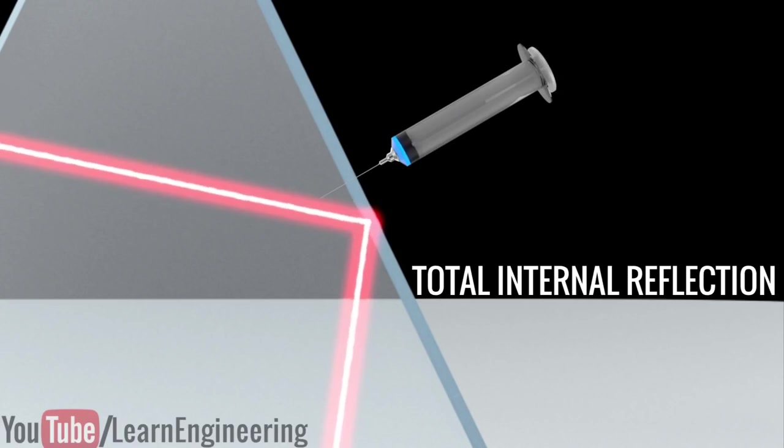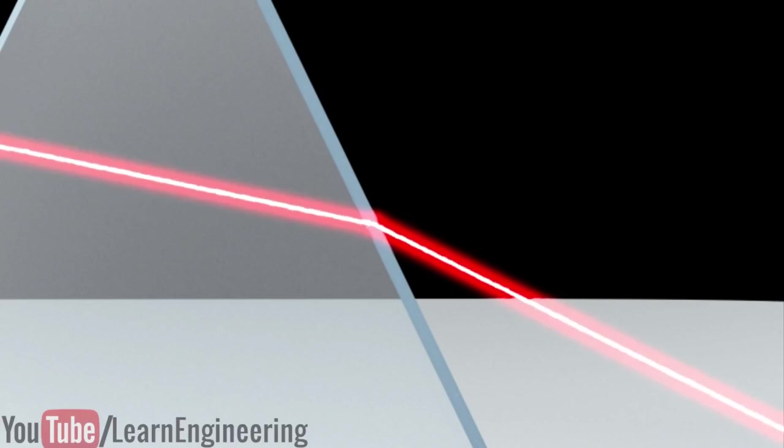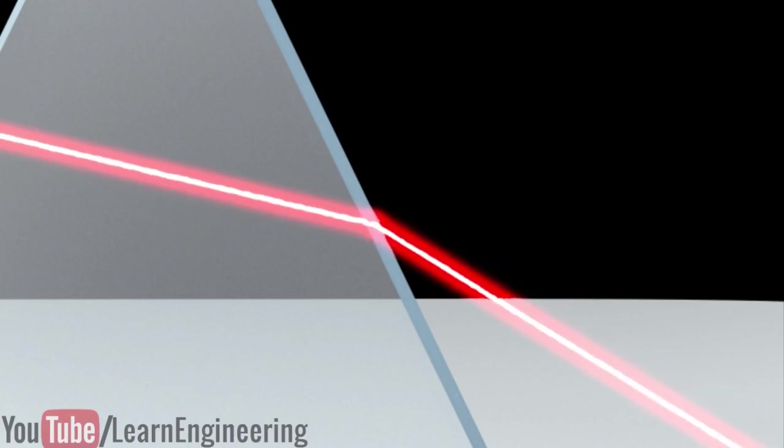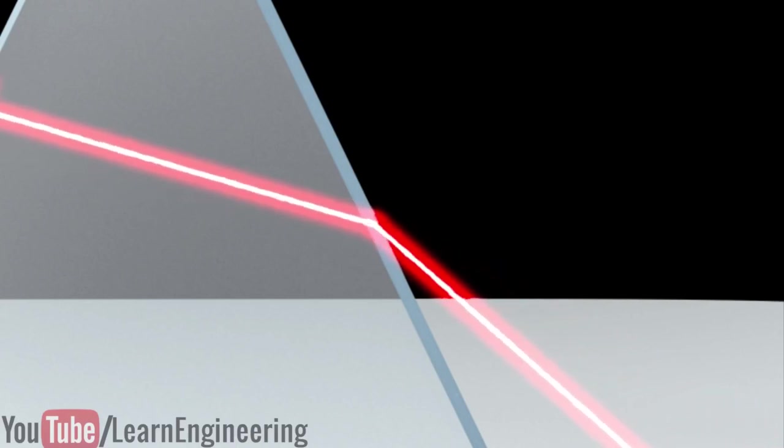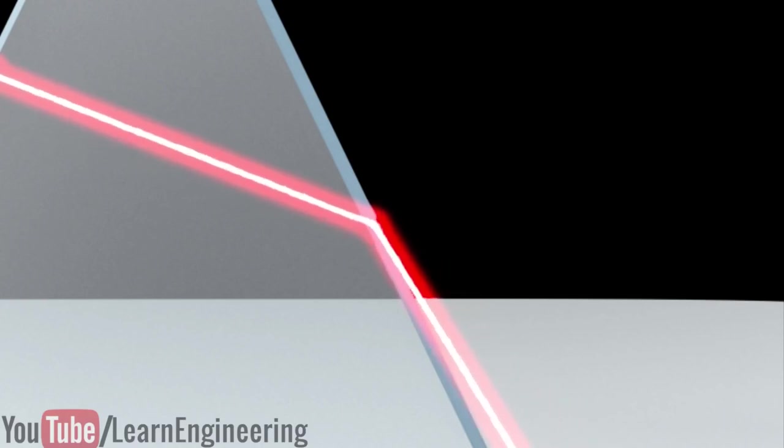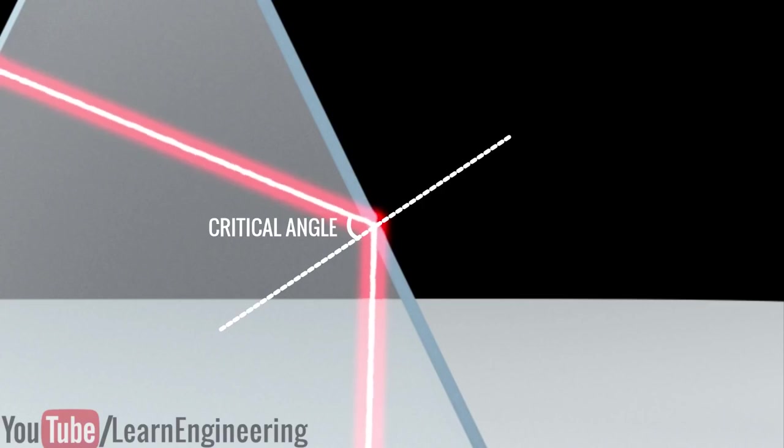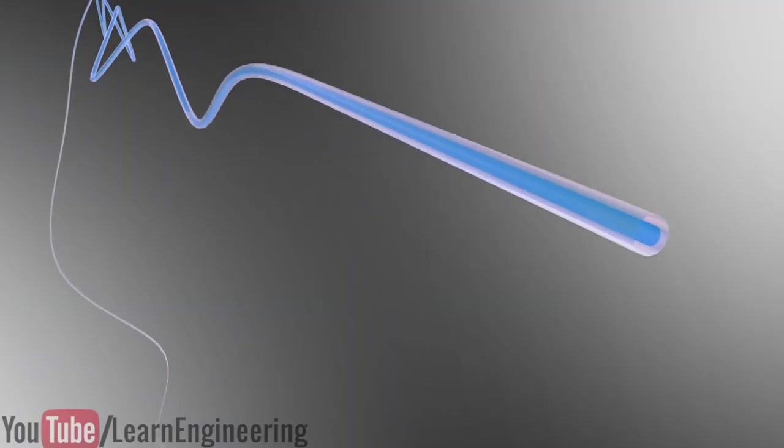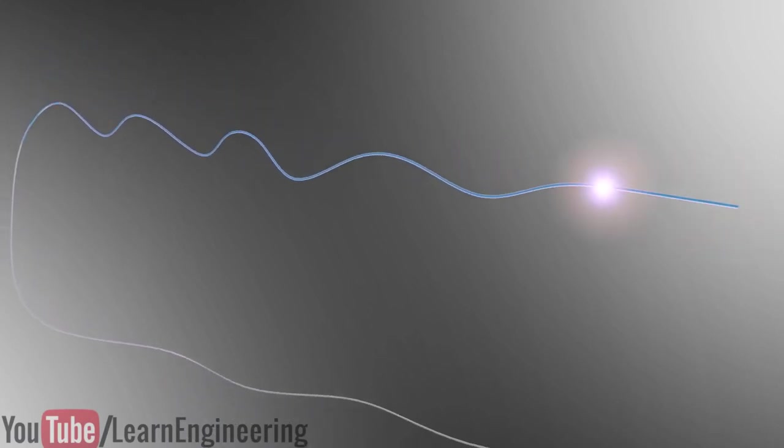Total internal reflection is possible if we increase the incident angle rather than increasing the refractive index. In this case, at a certain angle called the critical angle, the light will come back to the first medium. This phenomenon of total internal reflection is used in optical fiber cables to transmit the light.